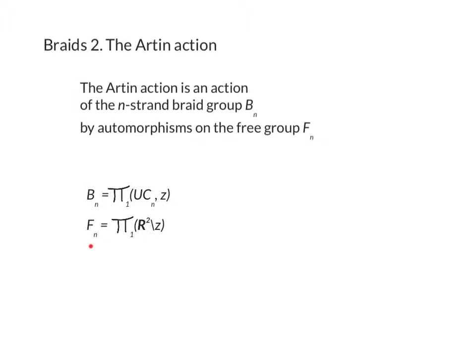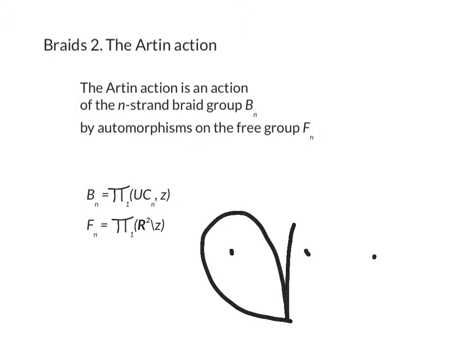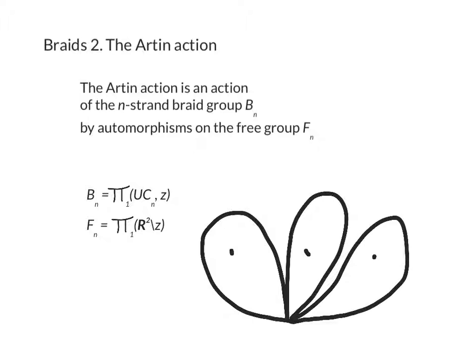The free group FN is the fundamental group of the plane minus a configuration of n points. If you cut n points out of the plane, what's left retracts onto a collection of circles. Here's a configuration of three points in the plane — one, two, three — and if I remove those points, what's left retracts onto a wedge of three circles, using the word circle in the loosest possible sense. This object has fundamental group Z star Z star Z, coming from these three loops — it's a free group on three generators. In general, the n-generator free group is the fundamental group of the plane punctured at n points.